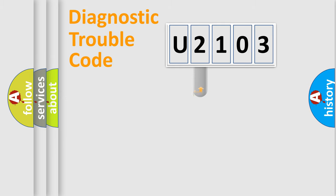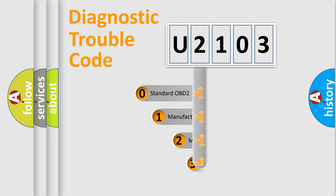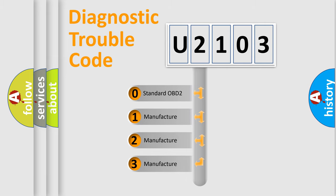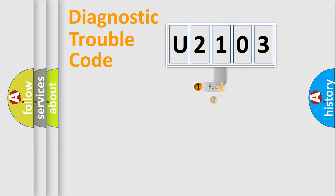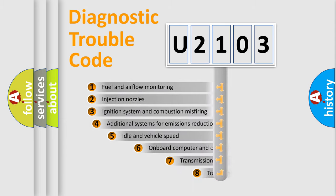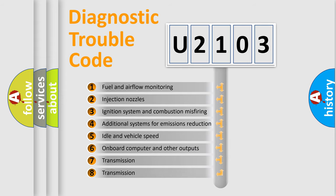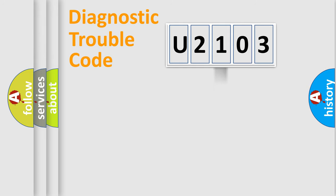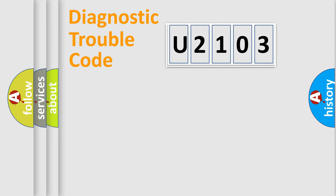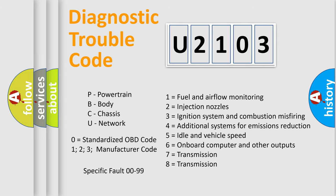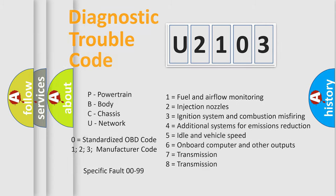This distribution is defined in the first character of the code. If the second character is expressed as zero, it is a standardized error. In the case of numbers 1, 2, or 3, it is a manufacturer-specific error expression. The third character specifies a subset of errors, and this distribution is valid only for the standardized DTC code. Only the last two characters define the specific fault of the group — but only when the second character is zero.